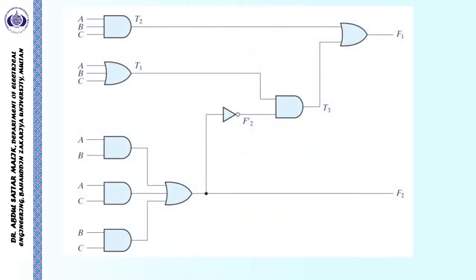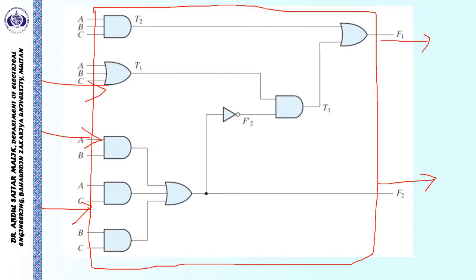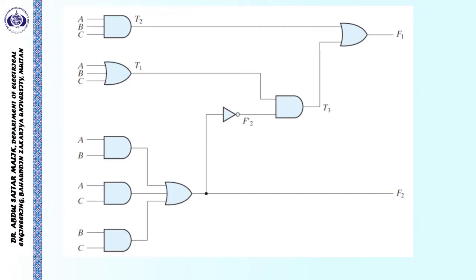Let's try to find out the boolean function of a given logic diagram by using the steps that we have defined during the previous slide. Here, we are provided with a logic diagram. This is a combinational circuit. If I just put it in a block, then I can very easily see that there are three inputs of this given circuit — A, B and C — and two outputs F1 and F2. We have already labelled different outputs of different gates.